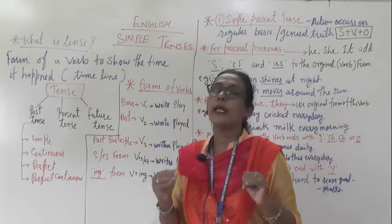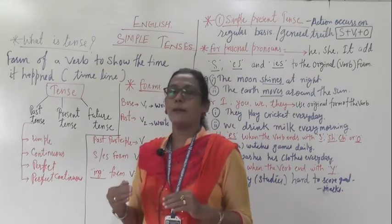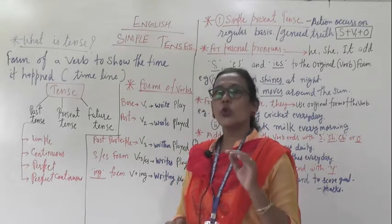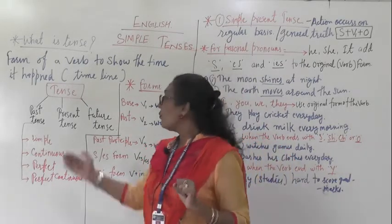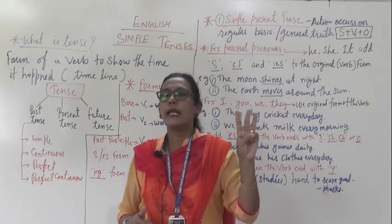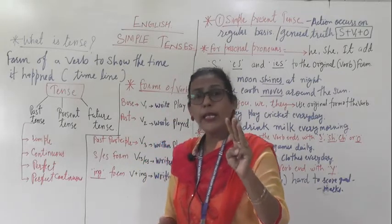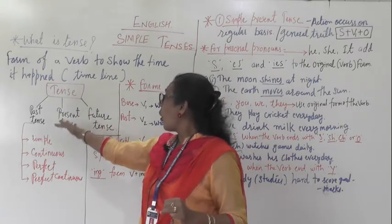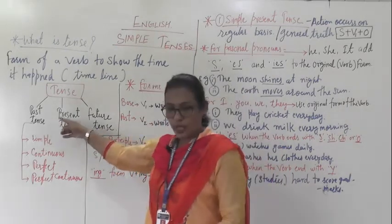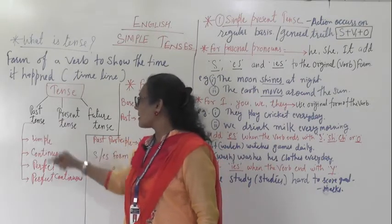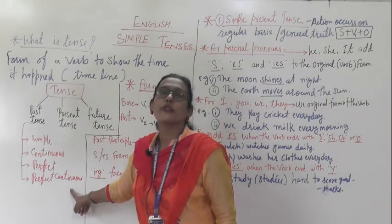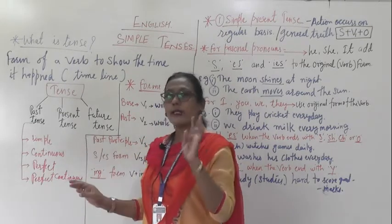That timeline we can say is called tenses. Tenses are divided into three parts: past tense, present tense, and future tense. These are the main three tenses. And each of these three tenses is again subdivided into four parts. For example, taking past tense: simple past tense, past continuous tense, past perfect tense, and past perfect continuous tense.